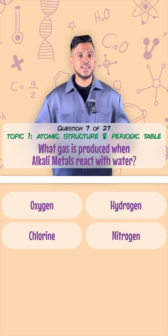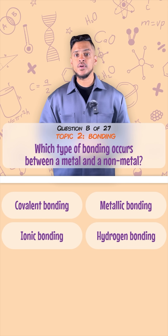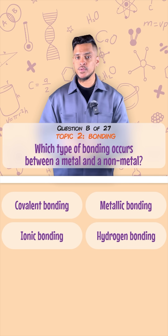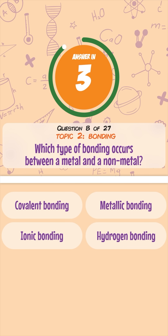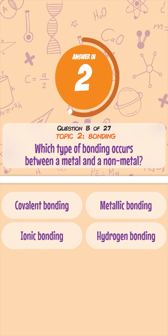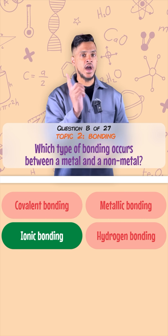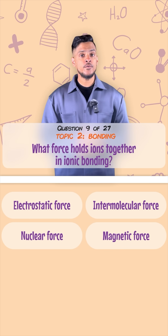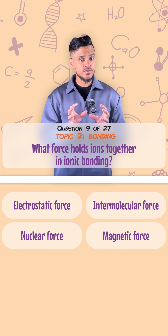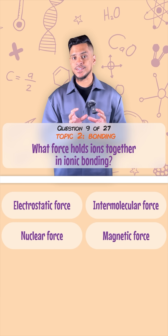What gas is produced when alkali metals react with water? The gas produced there is hydrogen. Which type of bonding occurs between a metal and a non-metal? Ionic bonding.